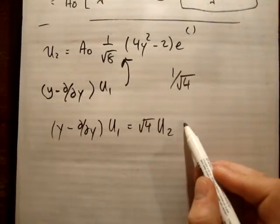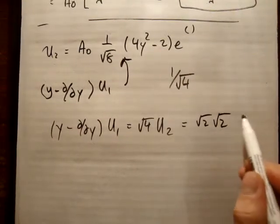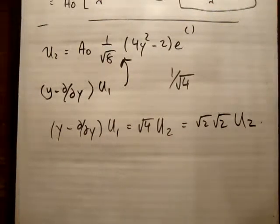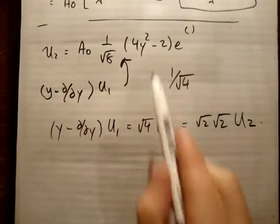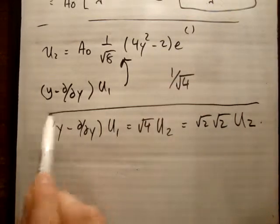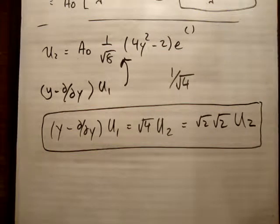Or we could say the following. You could say that it's root 2 times root 2 times U2. Okay? So now I know this is a bit hand-waving because I didn't actually normalize this, or even do this calculation. But I'm telling you that's what the answer is, right? So that's all that's important.